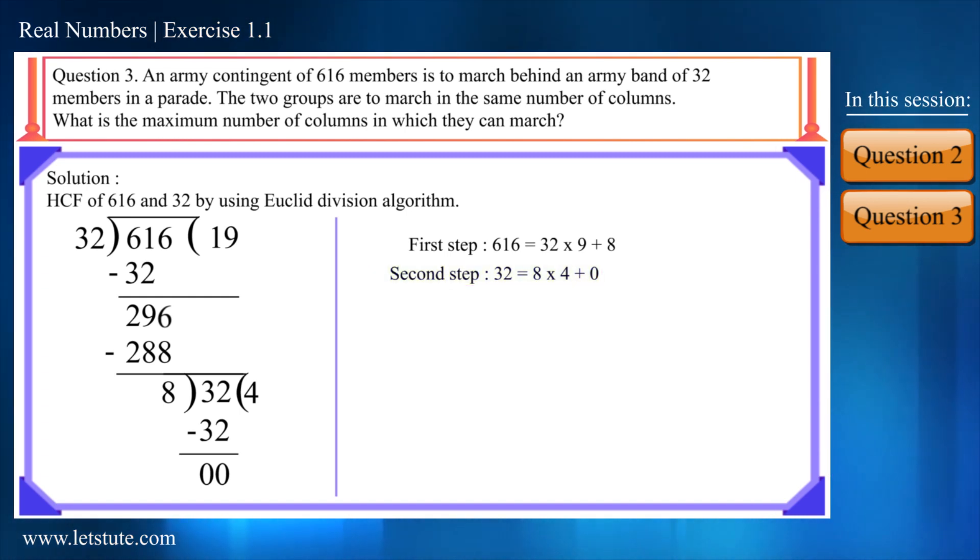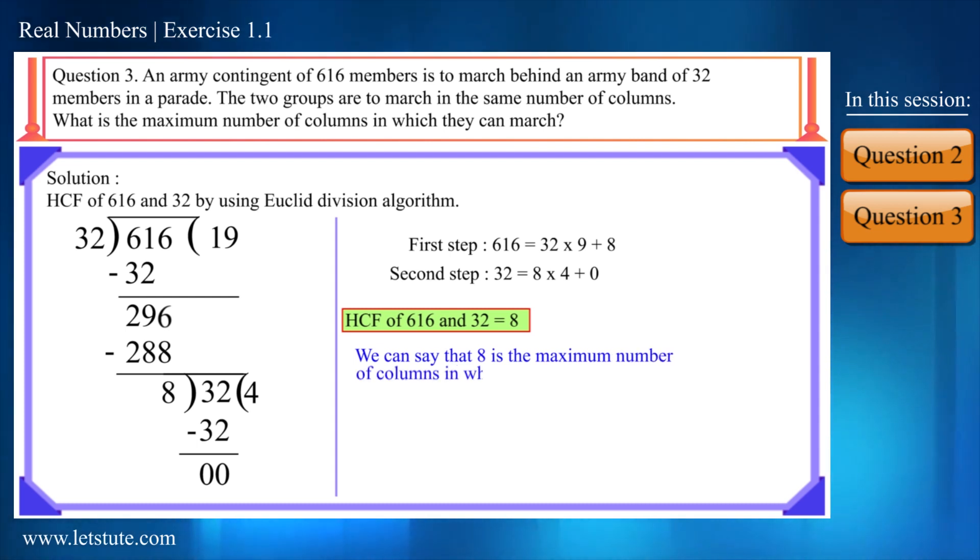Here we got the remainder as 0. So the HCF of these two numbers 616 and 32 will be 8. Because in the last step we got a divisor as 8.